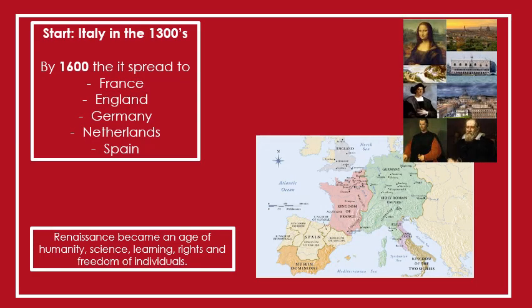Looking at this slide, we can see that the Renaissance started in Italy in the 1300s. By the 1600s it had already spread to most of Europe — France, England, Germany, Netherlands, and Spain. It became a time where all these countries in Europe started learning about humanity and science, and about the rights and freedom of certain individuals. There was a lot of exploration, discovery, and learning during this Renaissance period.